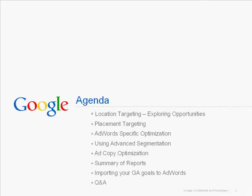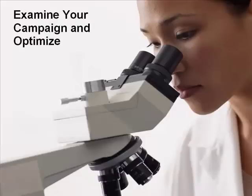Let's go through the agenda today. We'll talk about several topics: first, location targeting and exploring opportunities; second, placement targeting; then AdWords-specific optimizations; using event segmentation in Google Analytics; ad copy optimization; a summary of reports; and briefly importing your GA goals into AdWords. Then we'll go to Q&A.